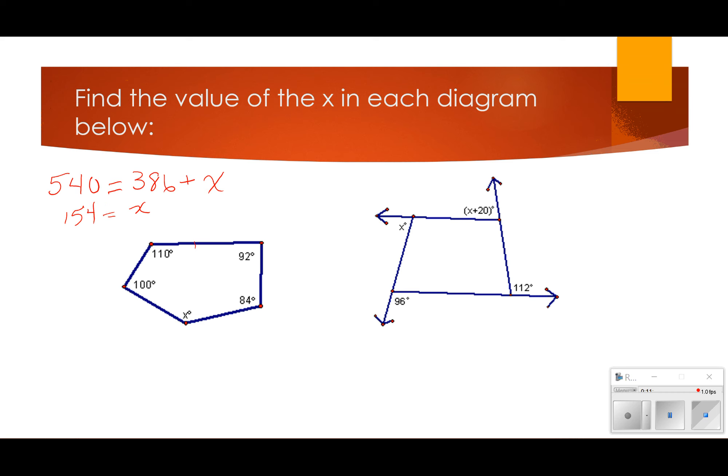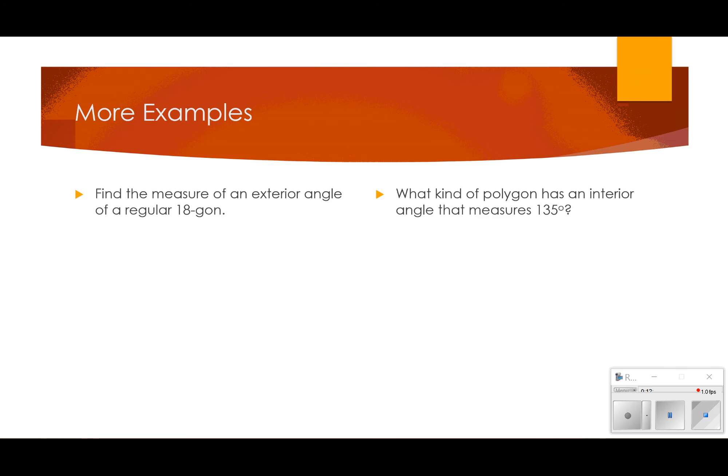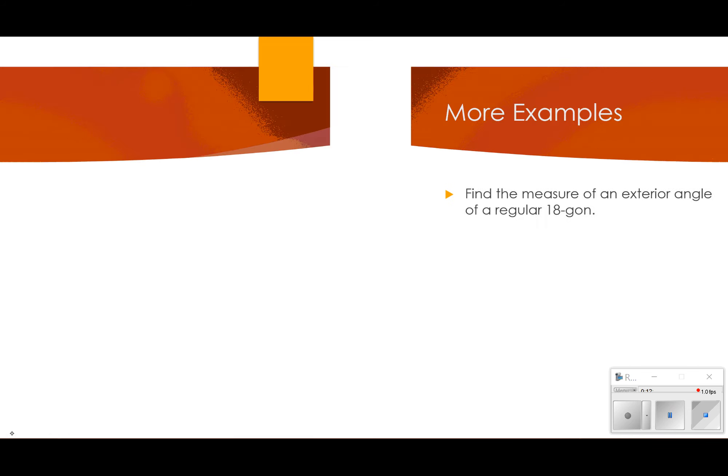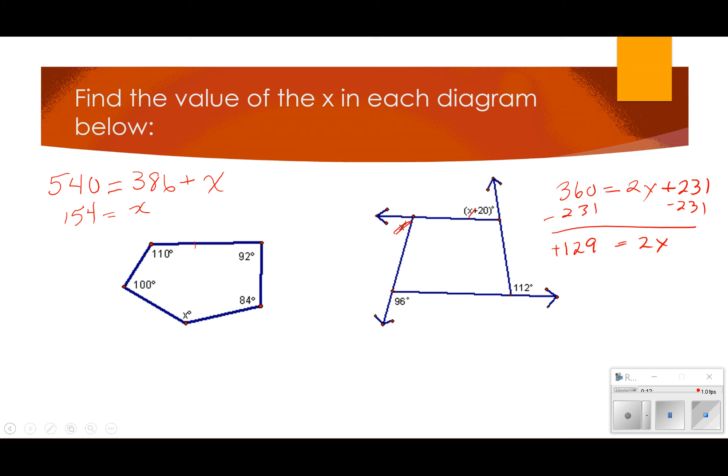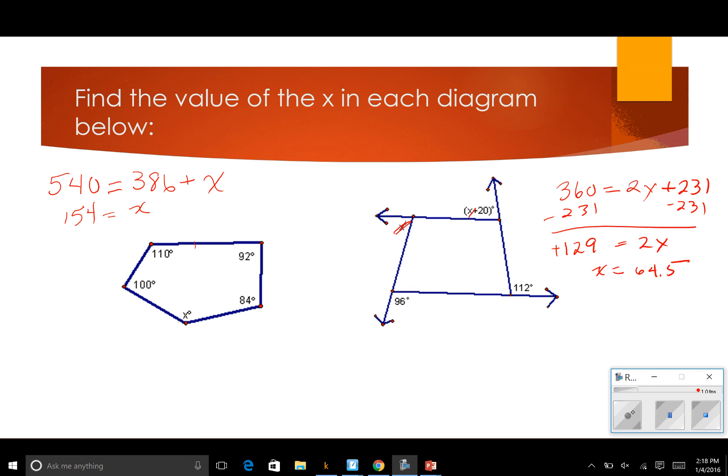In this second example, all of my angles are exterior, so they add up to 360 degrees. So, if I add up what I have, I have two x's. And then 20 plus 112 plus 96 is 231. And so, just a real simple two-step equation. If I subtract 231 from both sides, I'm going to get negative 129. That's going to equal 2x. So, if I divide by 2, I'm going to get x equal to 64.5.